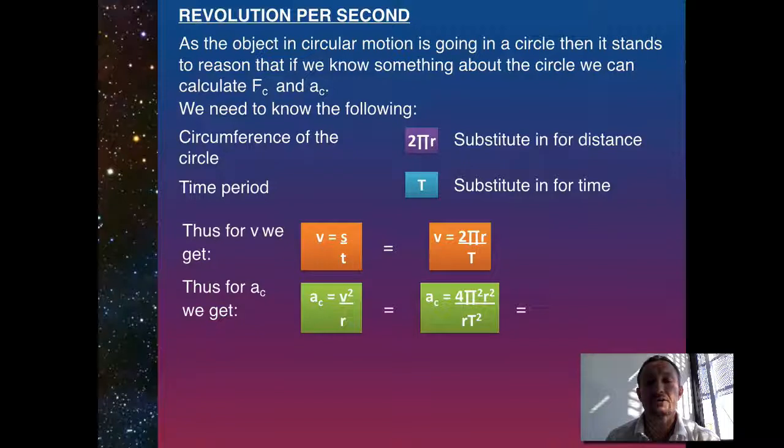we get AC equals 4 pi squared over R squared divided by R T squared. Now, our 2 R's are going to cancel, so as a result, our centripetal acceleration in circular orbit basically is given by 4 pi squared R divided by T squared.